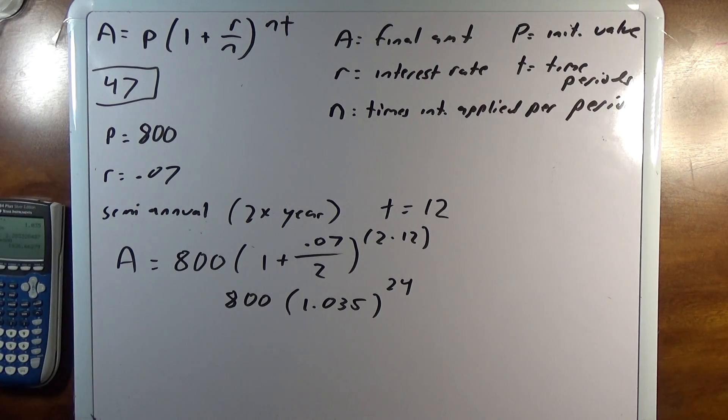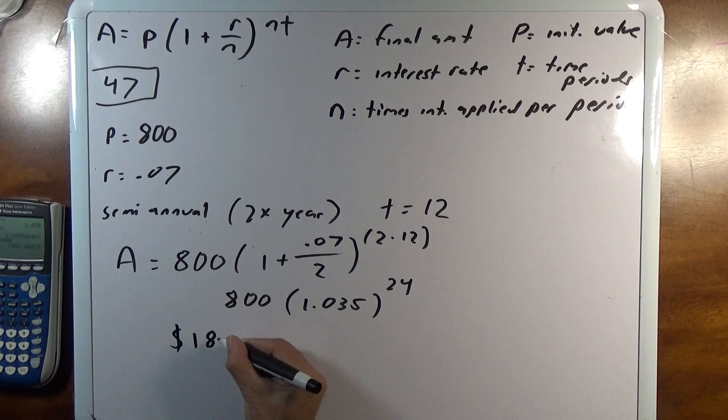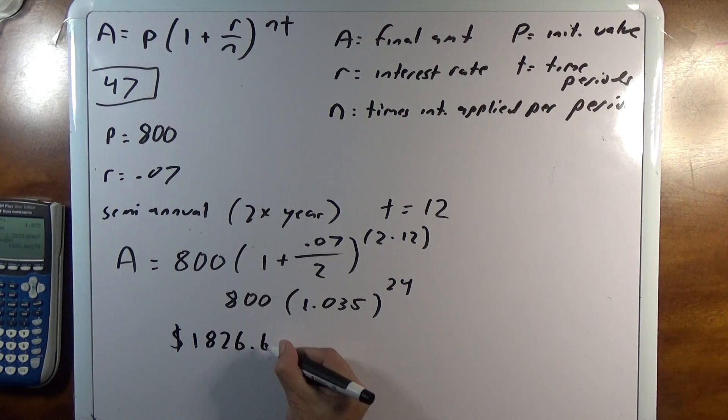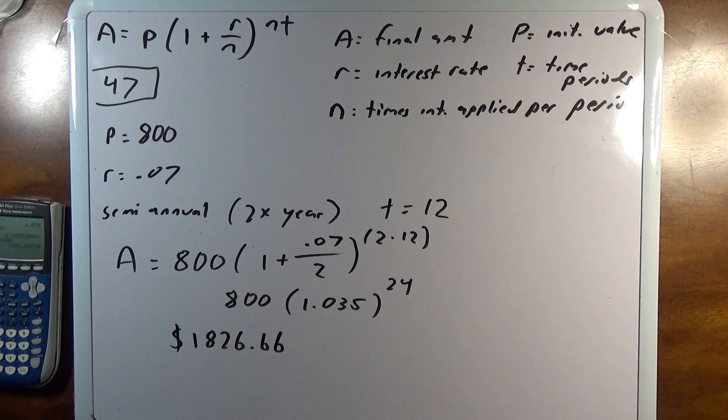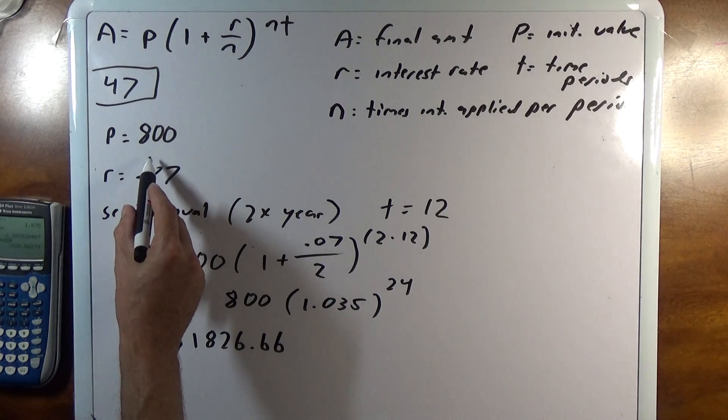And if it doesn't say what you round to, you're going to round to the nearest cent, which is 1826.66. So I get $1,826.66. And is this reasonable? Obviously if you get something lower than what you started with, it's not.